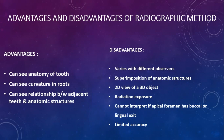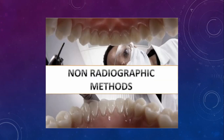Advantages of the radiographic method include the ability to see tooth anatomy and root curvatures, and the relationship between adjacent teeth and anatomic structures. Disadvantages include variation between observers, superimposition of anatomical structures, provision of a 2D view of a 3D object, radiation exposure, inability to interpret if the apical foramen has a buccal or lingual exit, and limited accuracy. These disadvantages have driven researchers toward non-radiographic methods.